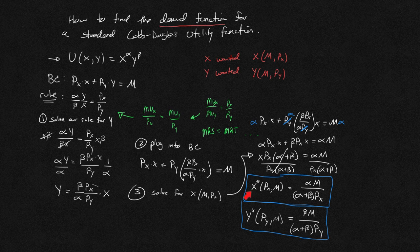My x star, the optimal level of x, is going to be alpha times m in the numerator, alpha plus beta times px in the denominator, whereas my optimal level of y, my demand curve for y, is going to be beta times m all over alpha plus beta times py. I hope this helps out with figuring out how to find the demand functions. The next thing I'll do is I'll use these demand functions for a standard Cobb-Douglas utility function to find our indirect utility function.